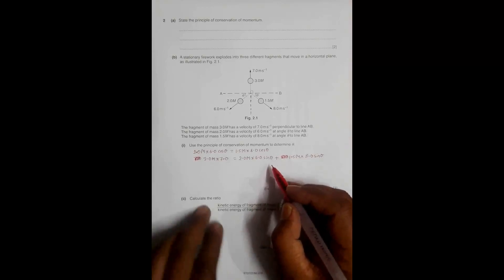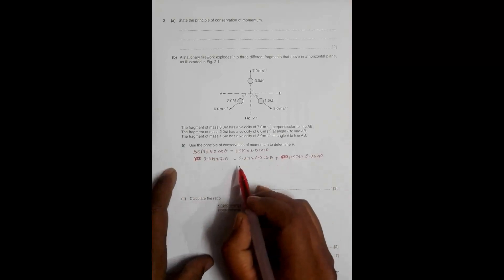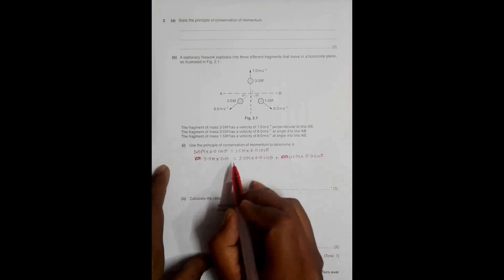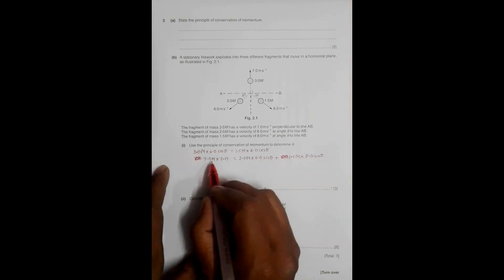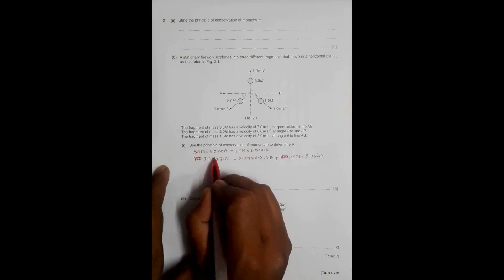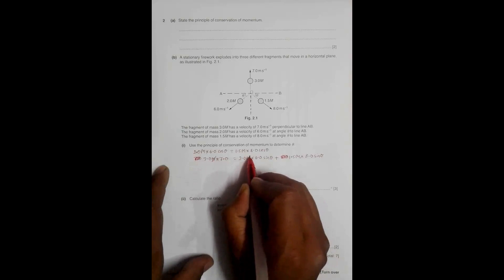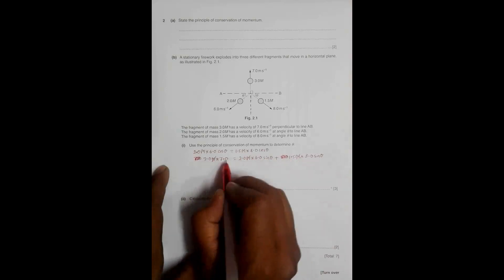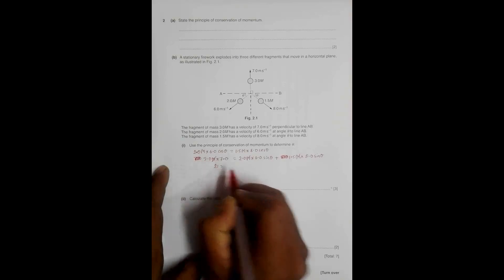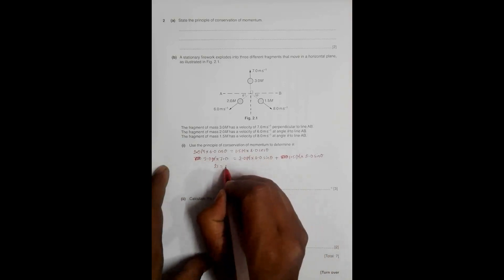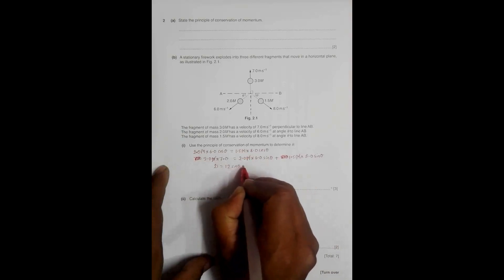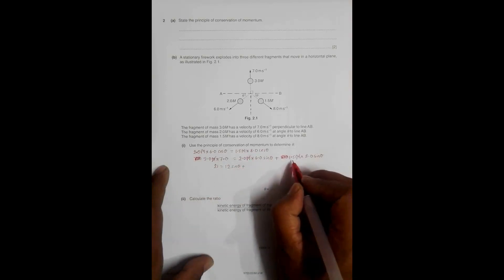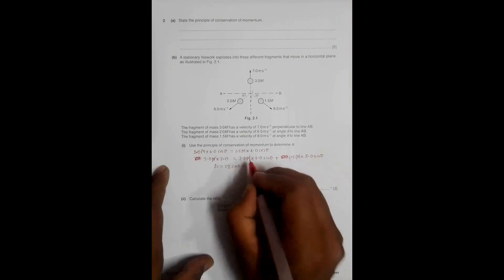If I consider the second equation, first we have to cancel the m's. Then I will have 3 times 7 equals 21, equal to 2 times 6 equals 12 sin theta, plus 1.5 into 8 is again 12 sin theta.